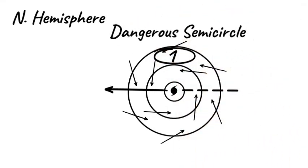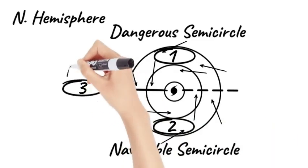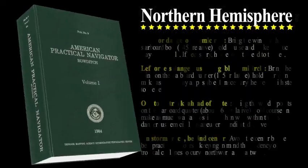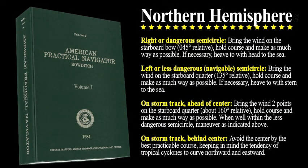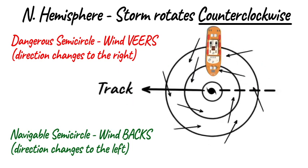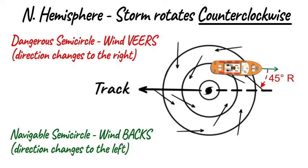Dangerous semicircle, navigable semicircle, on-storm path ahead, on-storm path behind. The American Practical Navigator, often referred to as Bowditch, summarizes some general rules for evading tropical revolving storms depending on the relative position of the storm center. For example, dangerous semicircle: In the Northern Hemisphere, if the wind veers or shifts to the right, the ship is most likely in the dangerous semicircle. Maneuver as necessary to keep the wind on the starboard bow, about 45 degrees relative, and increase speed as much as possible. If you must stop for any reason, be sure to face the bow of the ship into the seas.